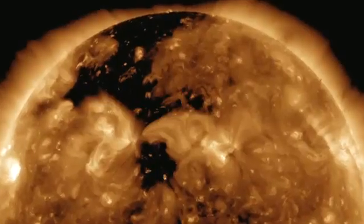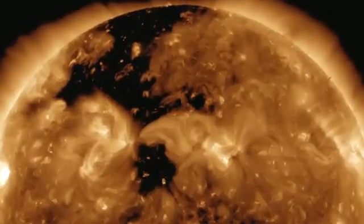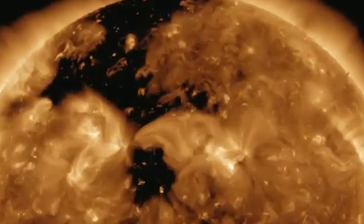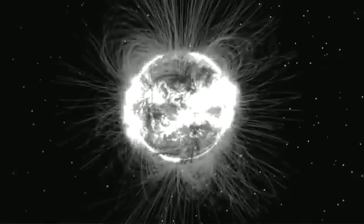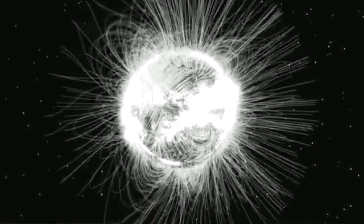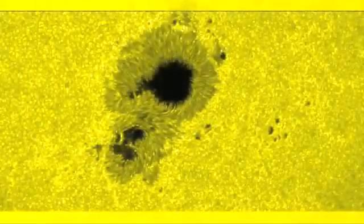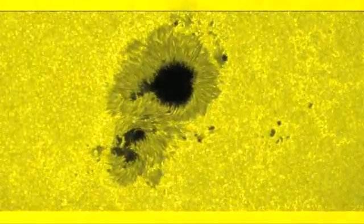And then there are coronal holes. Well, coronal holes are my favorite thing. I have several students working on them. They're just black regions. The magnetic field comes out of the surface of the sun and simply leaves the sun. That's in contrast to a sunspot, where the magnetic field comes out and then loops back into the sun nearby.